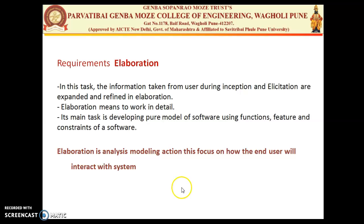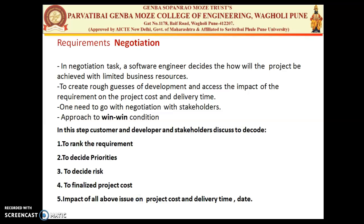Elaboration is an analysis modeling action that focuses on how the end user will interact with the system. The next task is requirement negotiation. In negotiation, a software engineer decides how the project will be achieved with limited business resources. If the project team is small and the requirements are large, we need to prioritize and select requirements from the customer so we can achieve the development phase within limited resources.